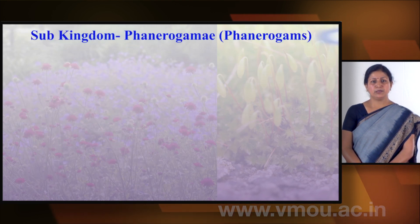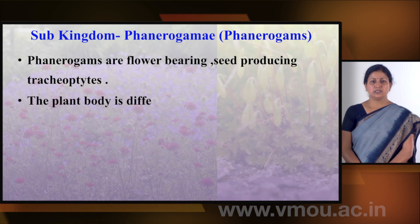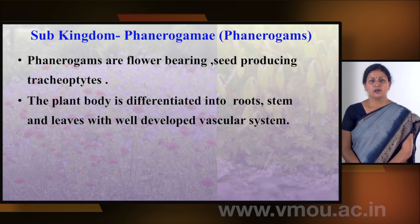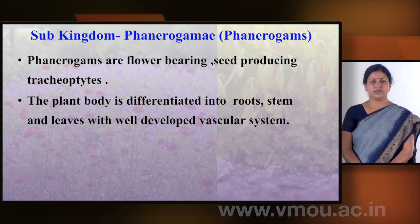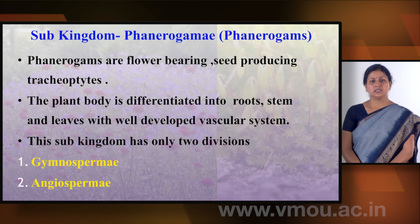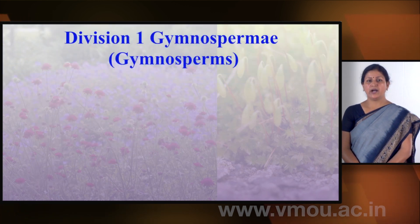Sub-kingdom Phanerogamy includes flowering plants. These are tracheophytes, meaning they have vascular bundles, and the plant body is differentiated into roots, stem, and leaves. This sub-kingdom is divided into only two divisions: Gymnospermy and Angiospermy. These include the higher plants.